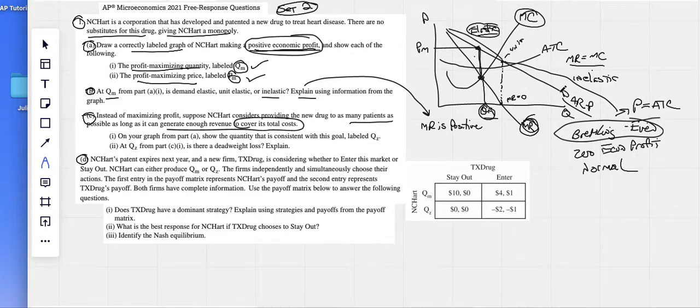So, right where price, the demand curve, hits your ATC, or your ATC hits that demand curve, that right there is the quantity, QZ, to show the quantity that is consistent with breaking even or just covering your total cost at zero economic or normal profit. So, wherever the ATC and the demand curve intersect, we go straight down, and that's our quantity to cover our total cost, to just cover our total cost.